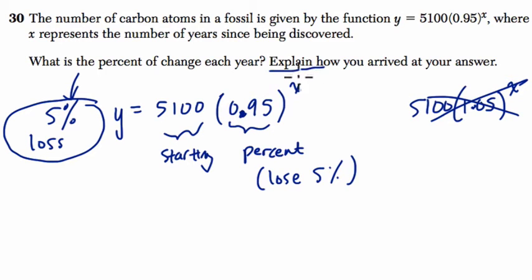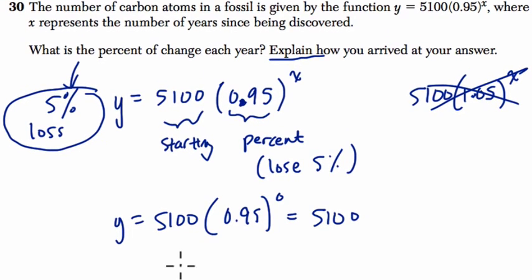And I want you to explain. That basically means I want you to give an example. So if I write y equals 5100, make your life easy, pick easy values to work with, times 0.95 to the 0, right? So this is at 0, right from the beginning. So 5100 times 1 is our starting value, 5100. 0.95 to the 0 is just 1.